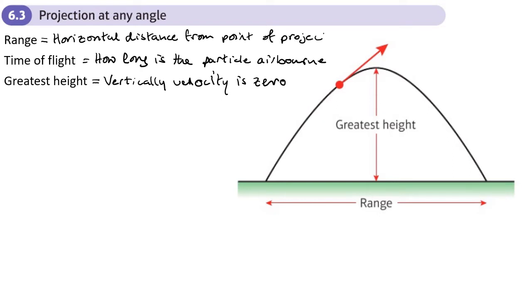The range is the horizontal distance from the point of projection to the landing point — when it hits the ground. We just need to know those terms; everything else is the same.